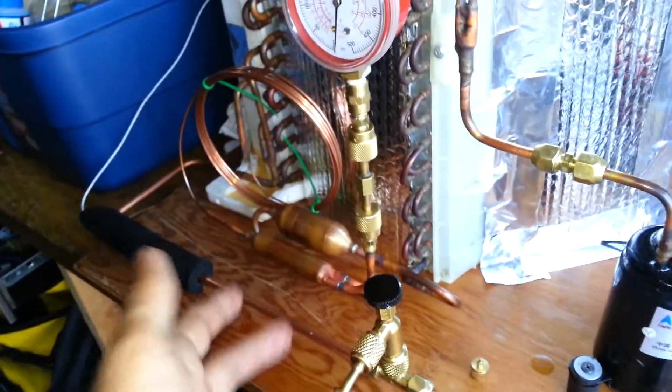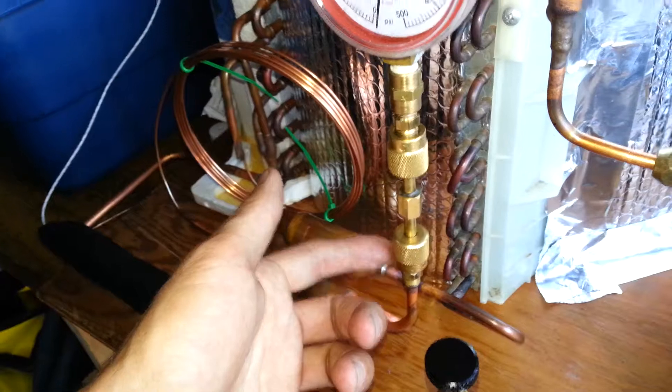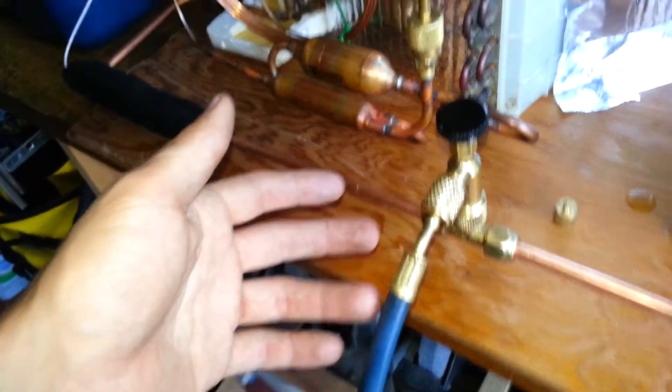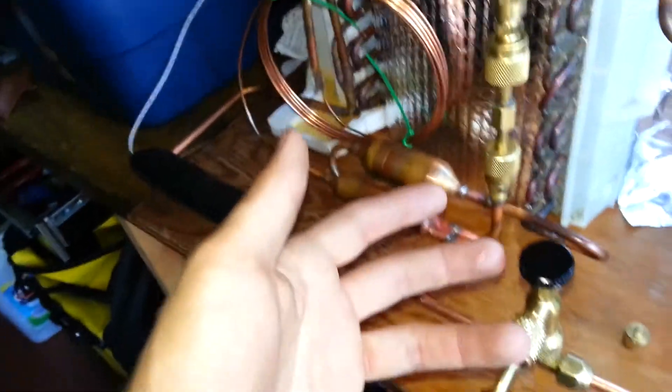But I don't have an actual service port on the high side. It's taken up by this high side gauge right now. So I ought to put a T or something like that in there so I can distribute the vacuum pump to both the high and the low side.